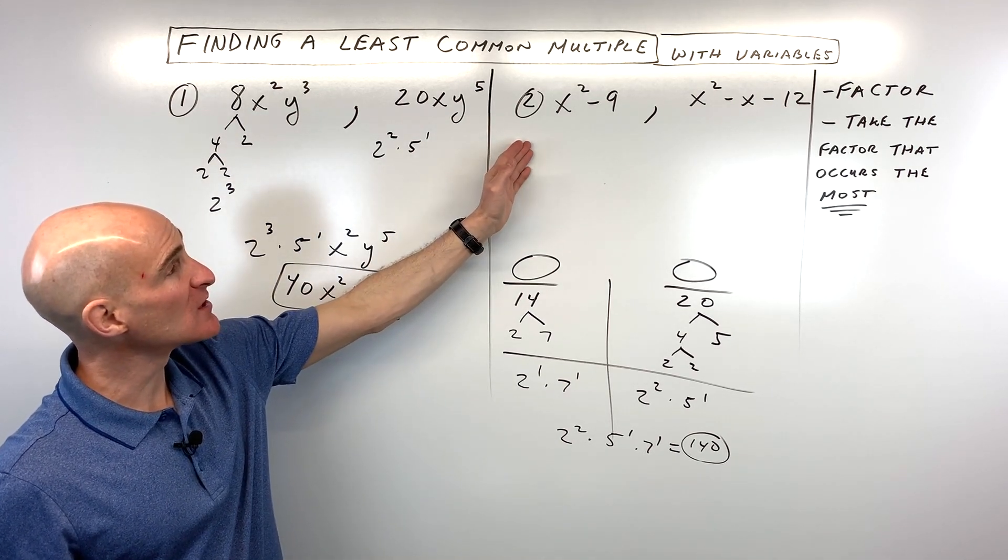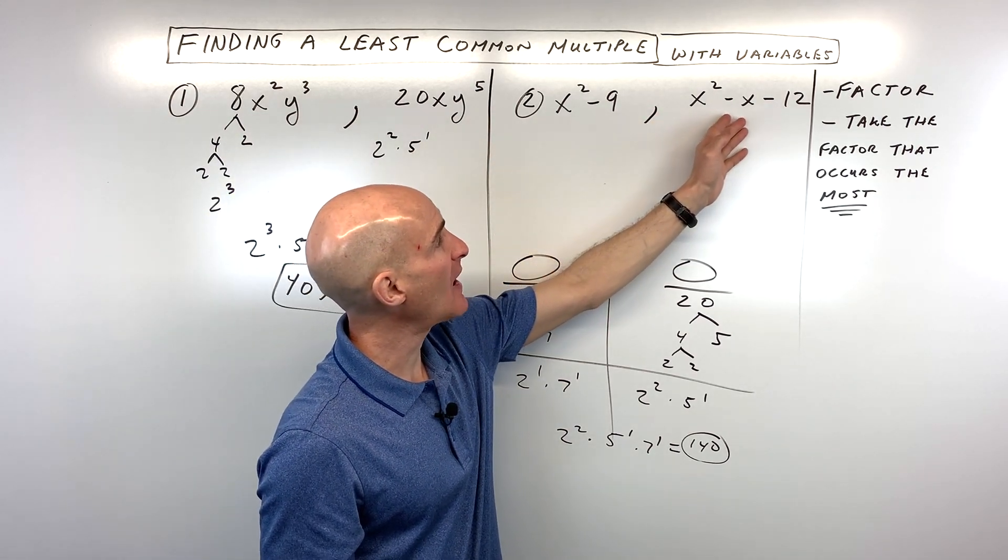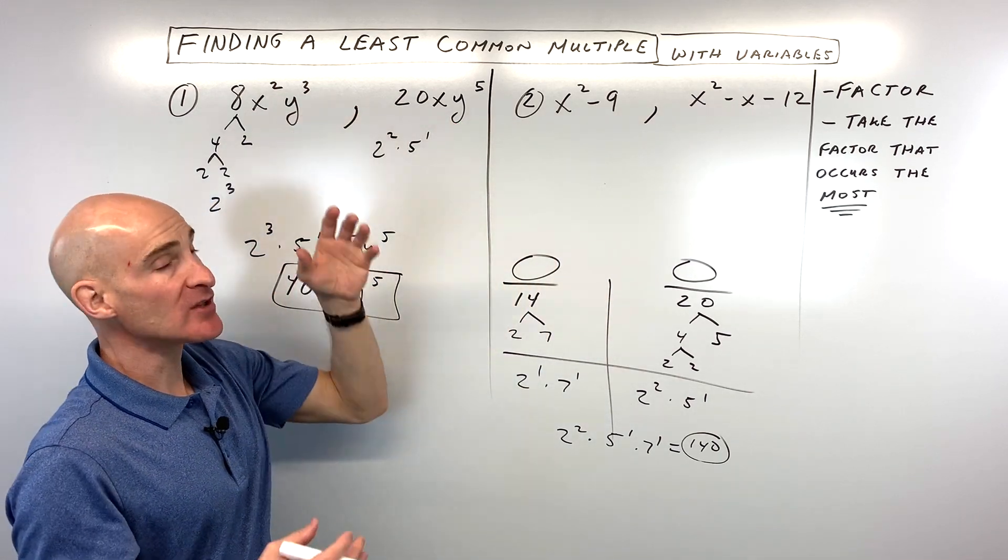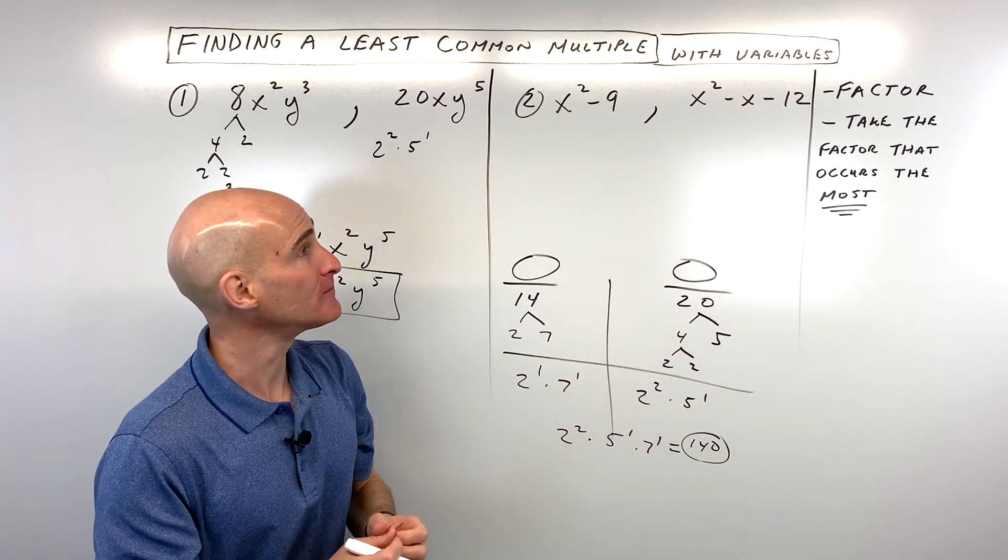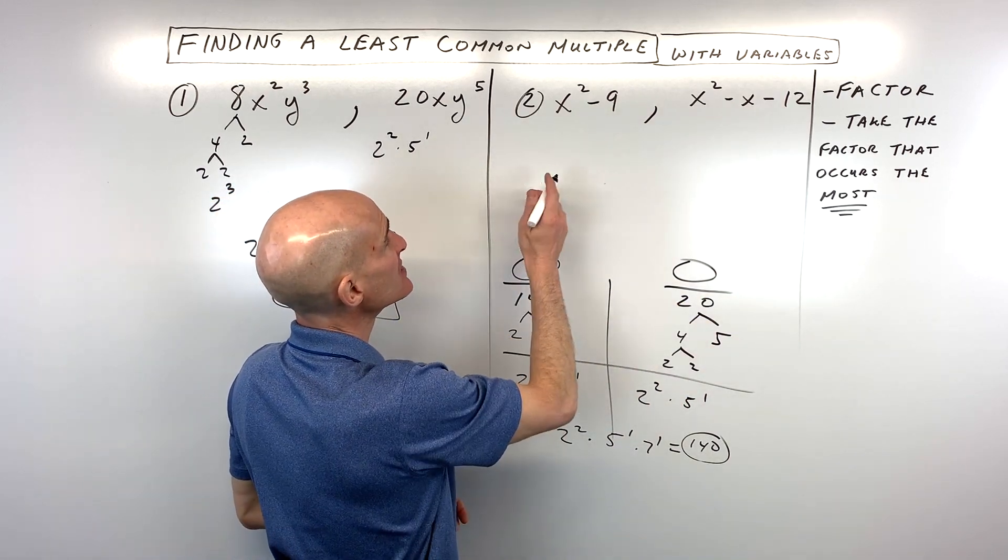Now for number 2, this one's a little bit more challenging, because what we have to do is - see these are monomials, like one group. This is a binomial, this is a trinomial. What we want to do is factor and see what this is made up of.